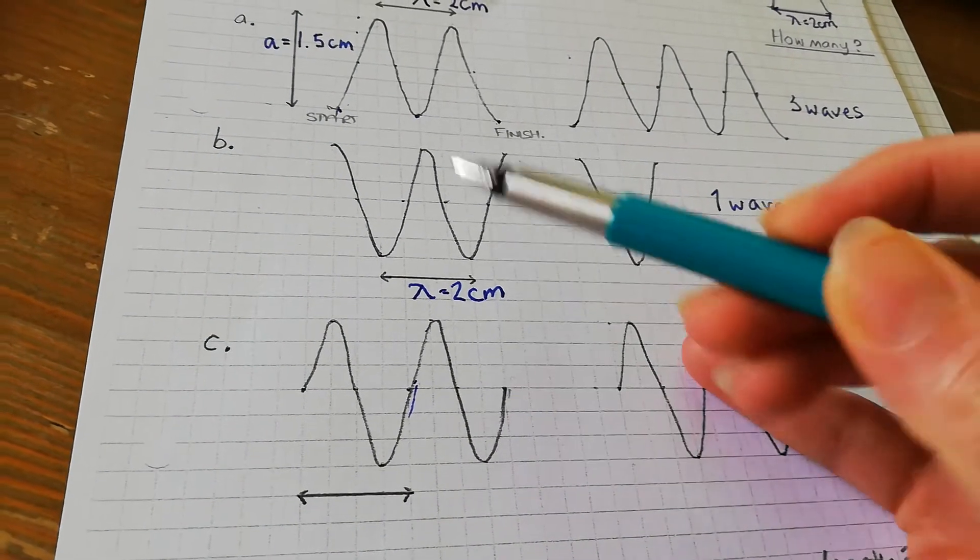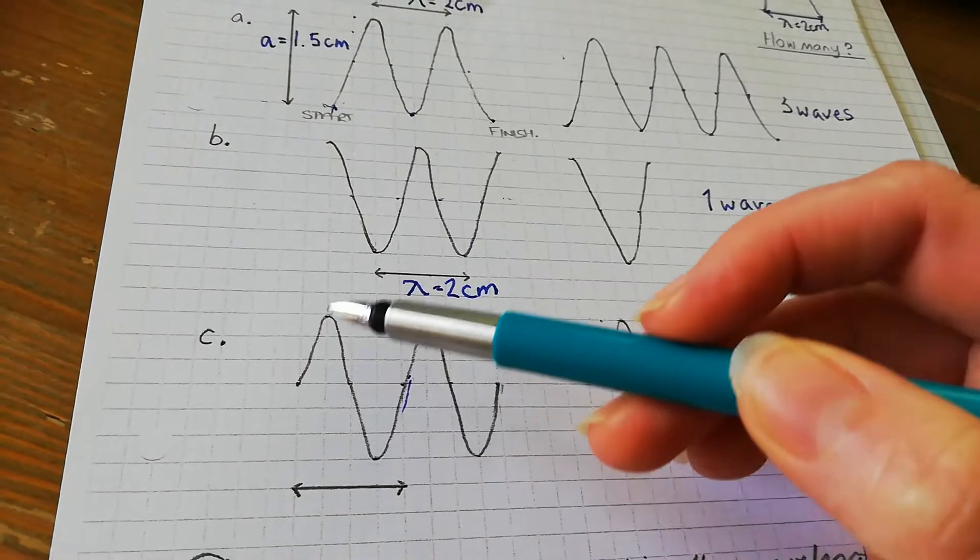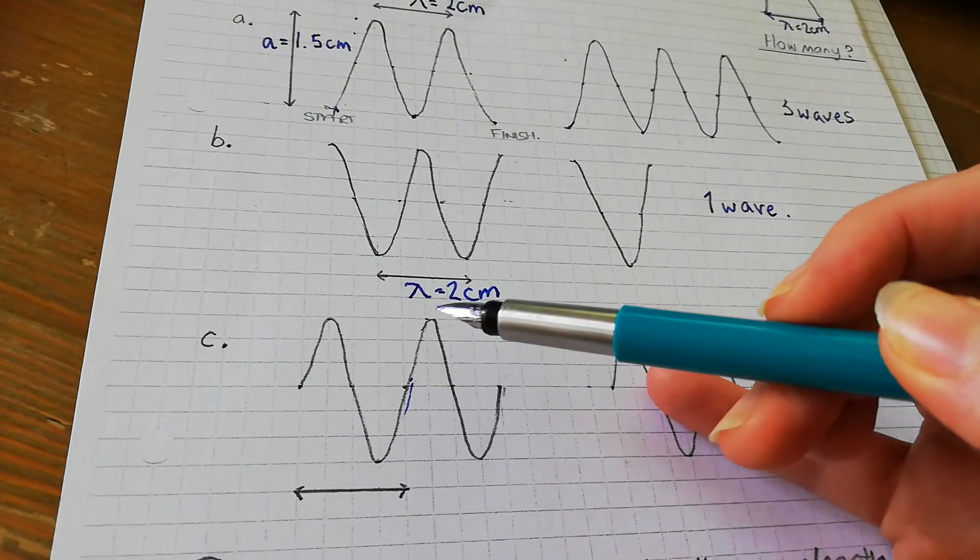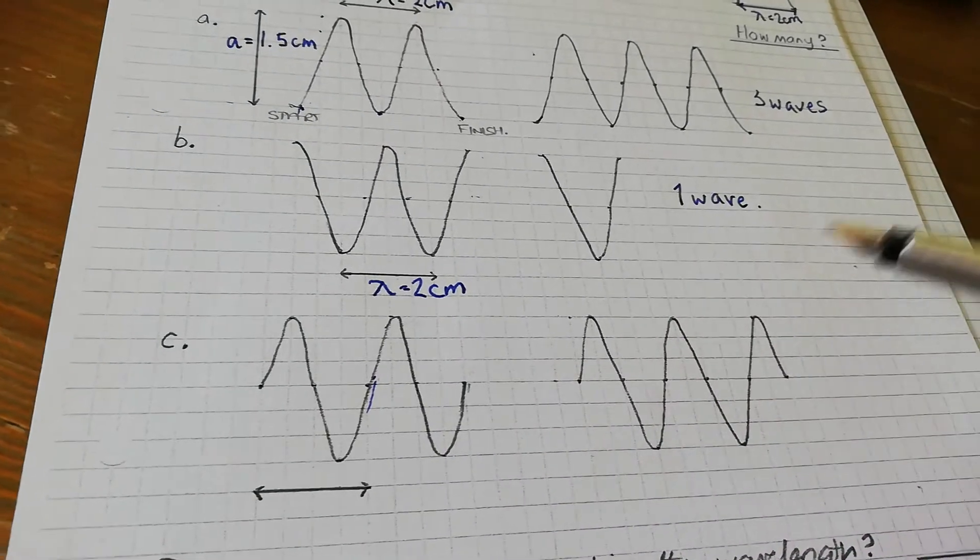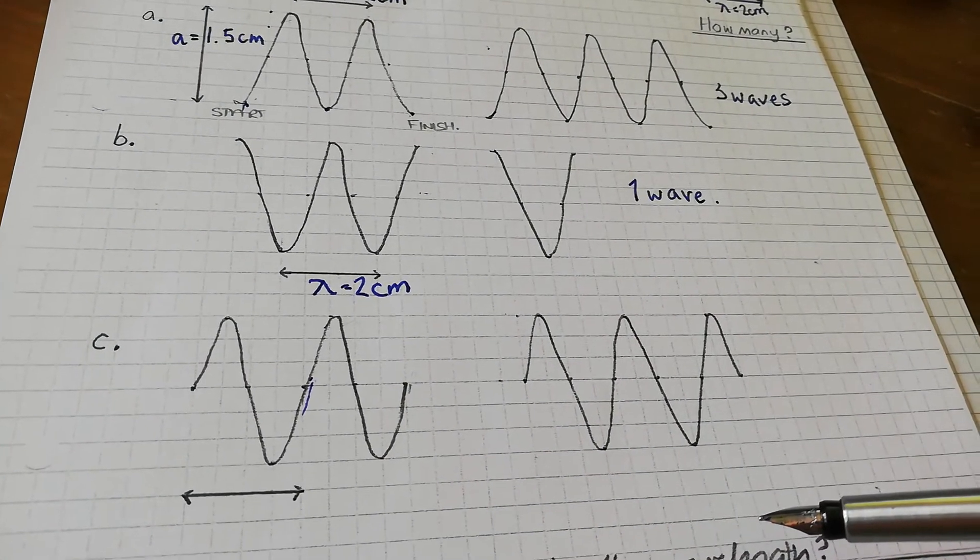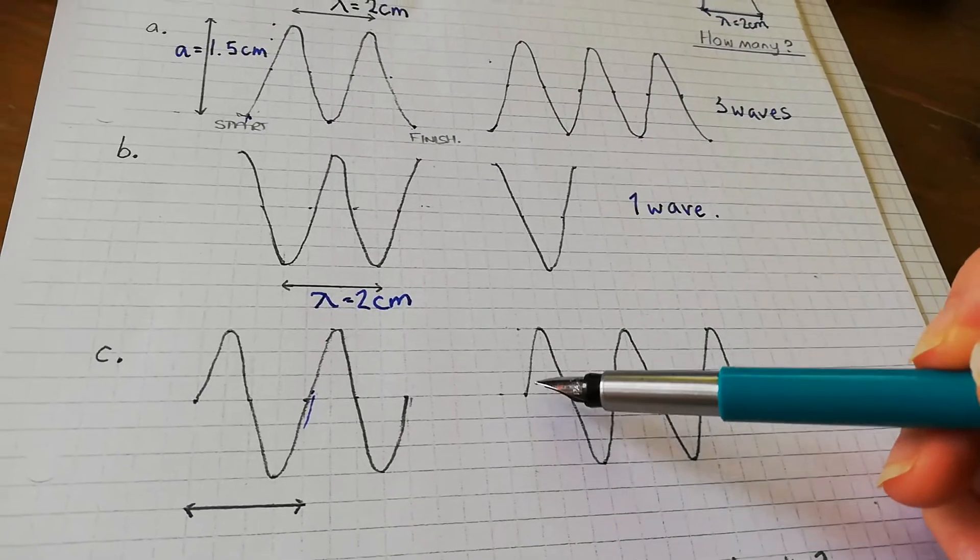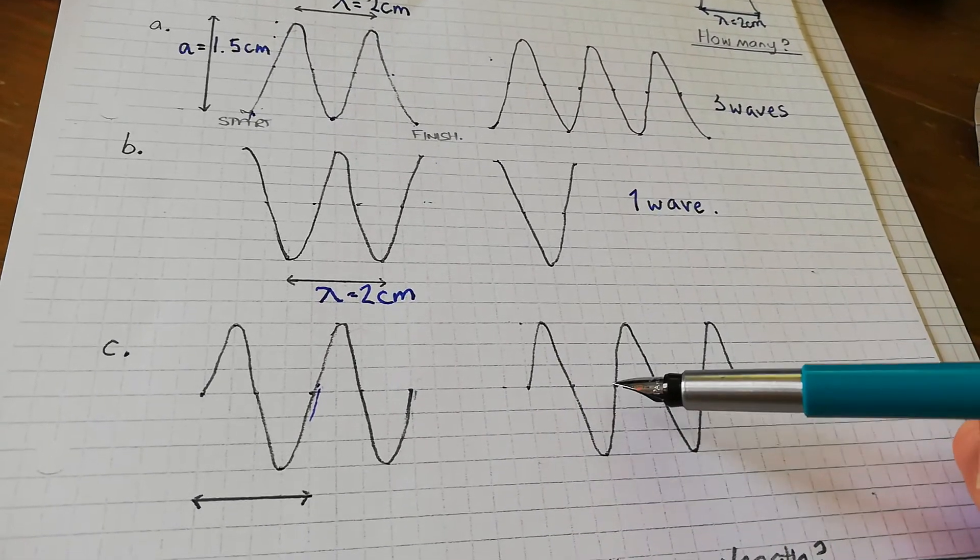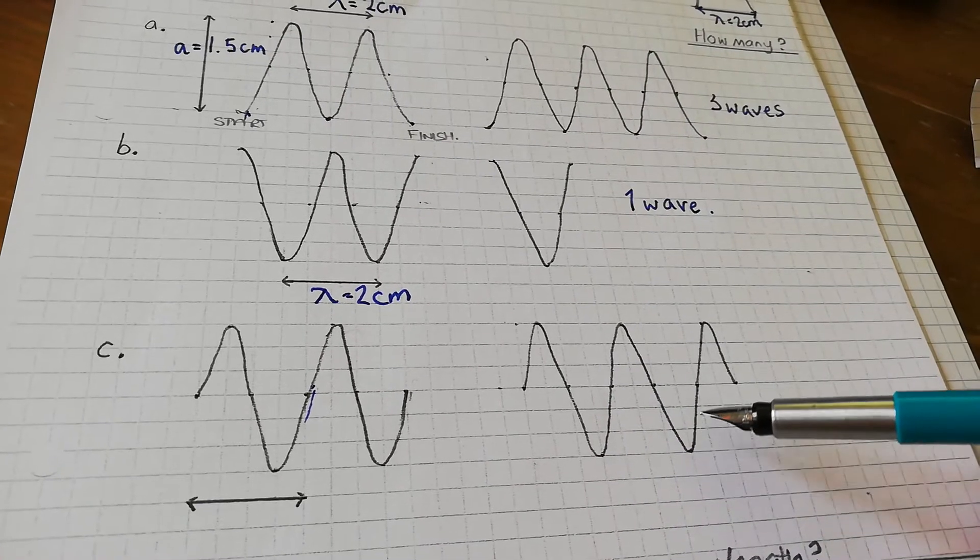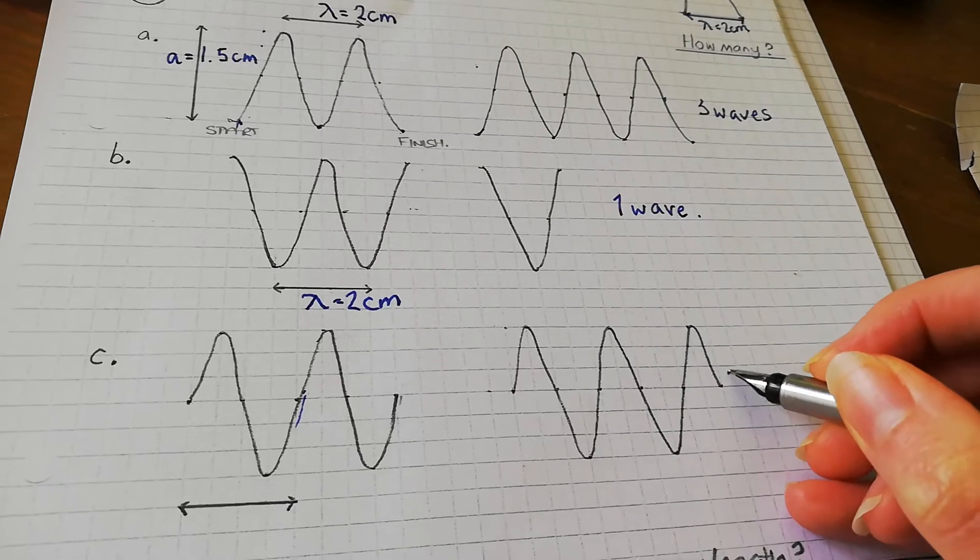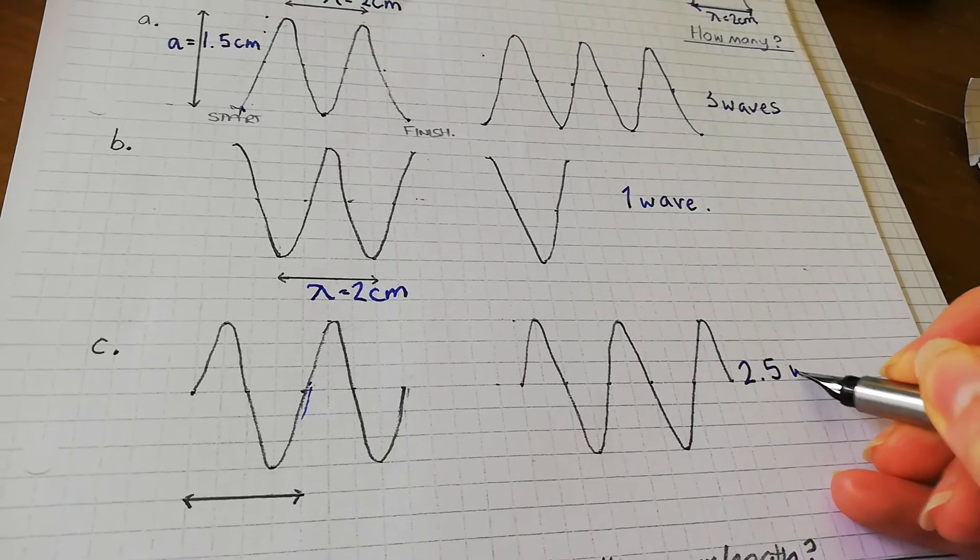So all of them are two waves, just drawn slightly differently. One wave, two waves. So how many waves are here? Pause the video if you want time to think. One, two and a half, so this is 2.5 waves.